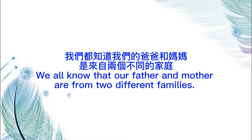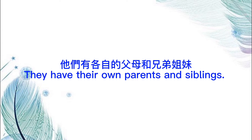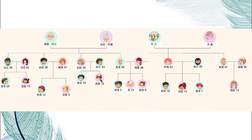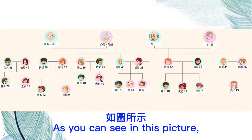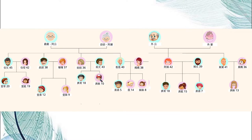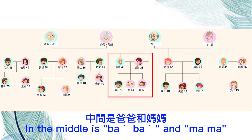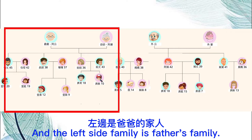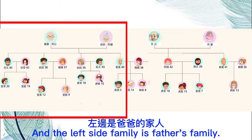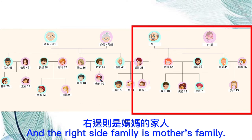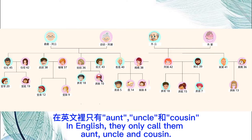We all know that our father and mother are from two different families — they have their own parents and siblings. As you can see in this picture, in the middle is 爸爸 and 妈妈. The left side family is 爸爸's family, and the right side family is 妈妈's family.